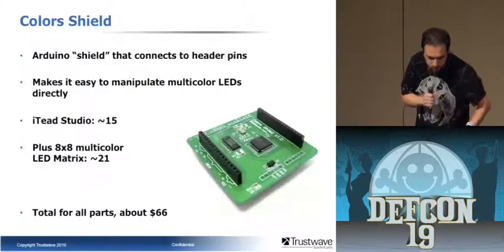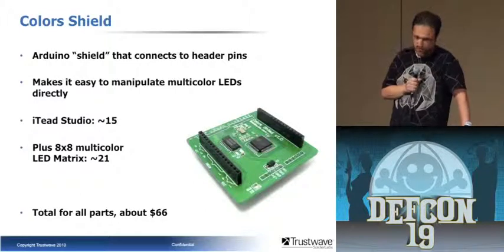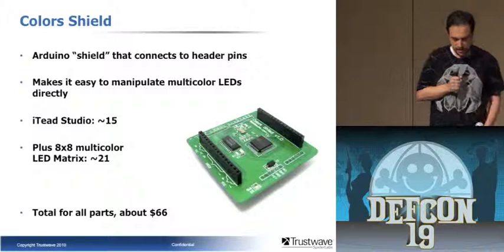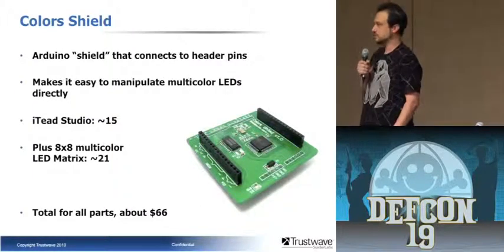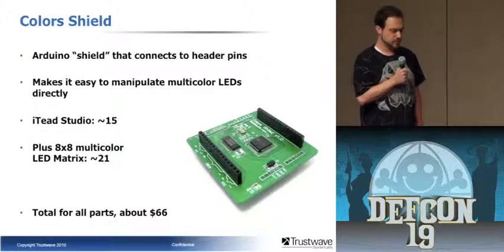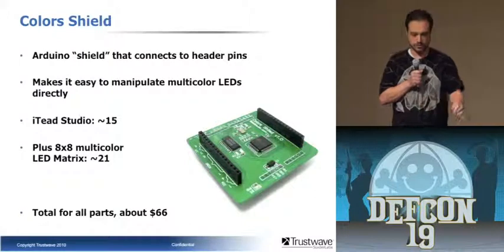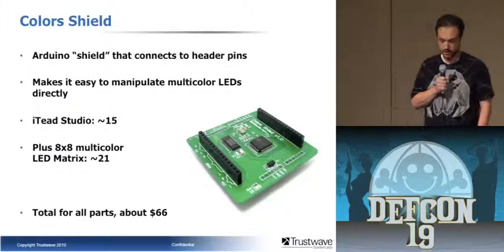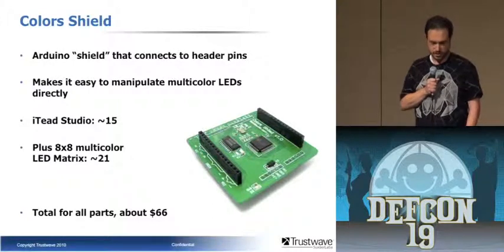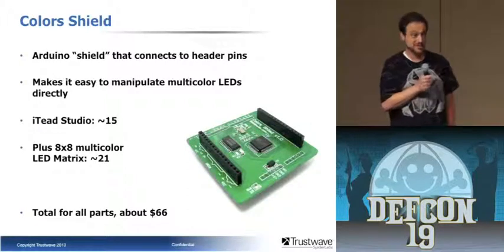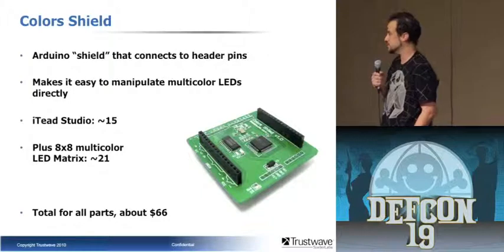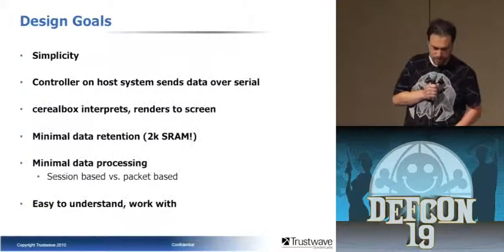You can get the Arduino Uno for about $30. There's also something called a color shield — add-on boards for Arduino are called shields. This one has a chip to control LEDs, which makes it very easy. IT Studio sells it for $15, and they also sell a multi-color LED matrix for about $21. So at the end of the day we're at about $66 for this. If somebody started mass producing something like this, they could probably get it down to $10.